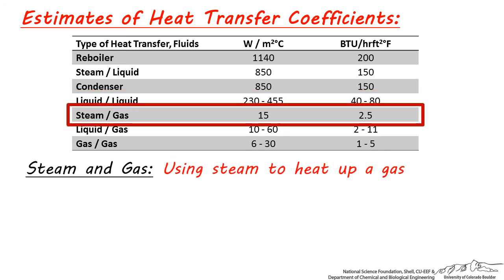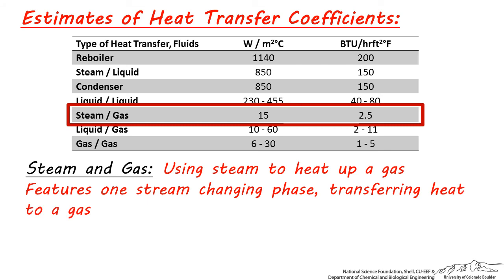When steam is used to heat up a gas, it condenses and transfers its heat, but since it is highly dependent on convection and not conduction, there is less heat transferred per unit area.